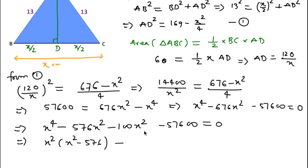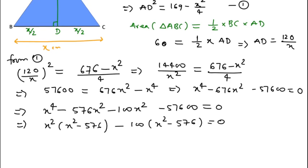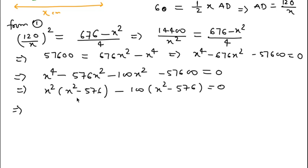Taking (x square minus 576) common, we get (x square minus 576) times (x square minus 100) equals 0.